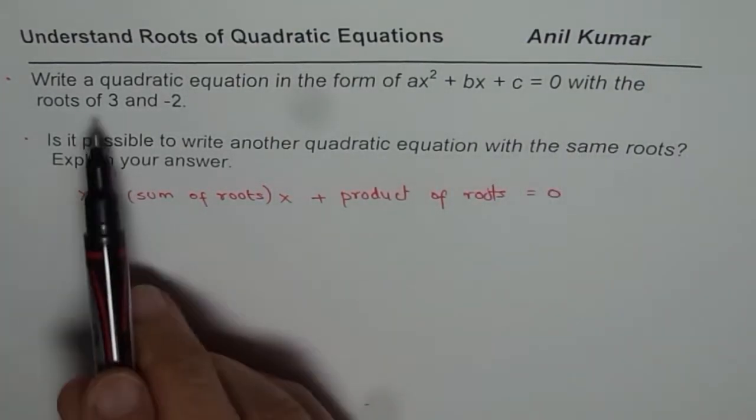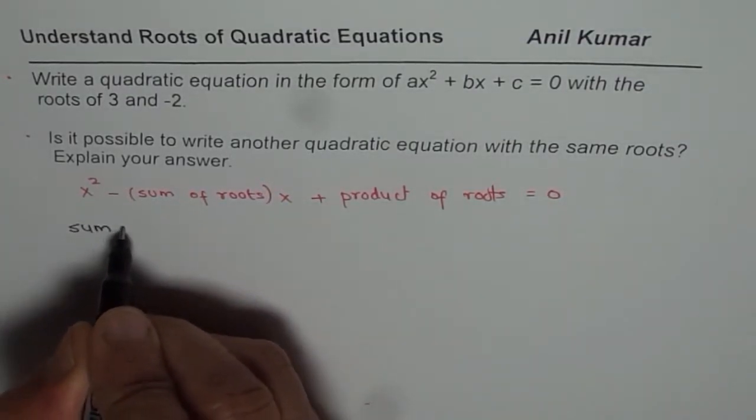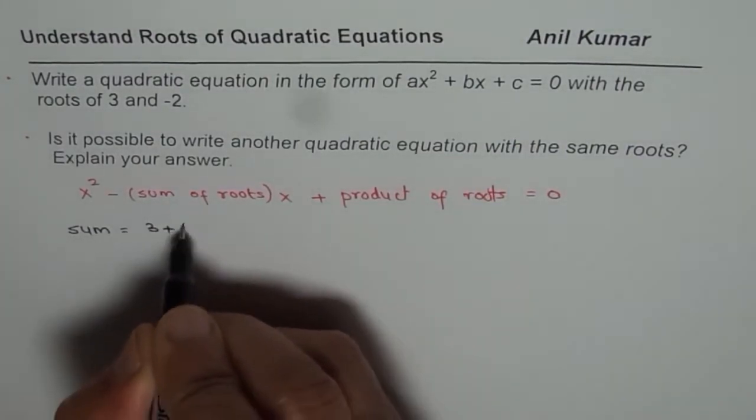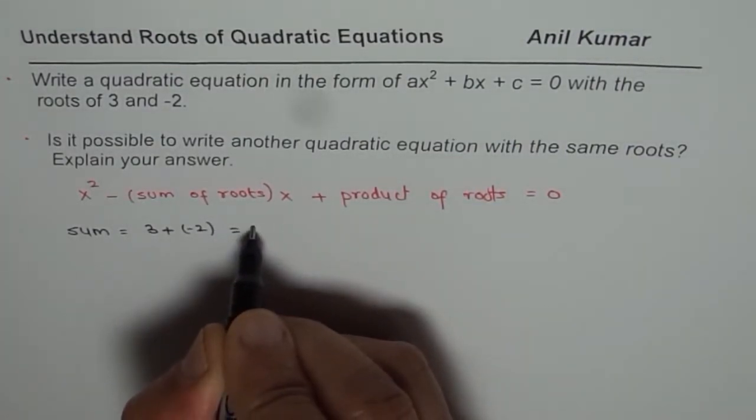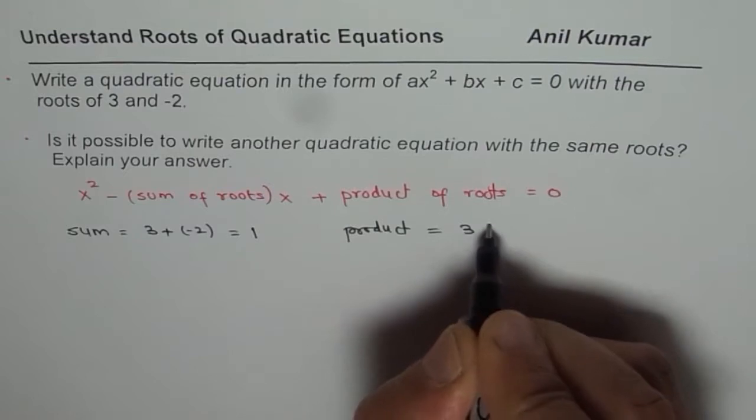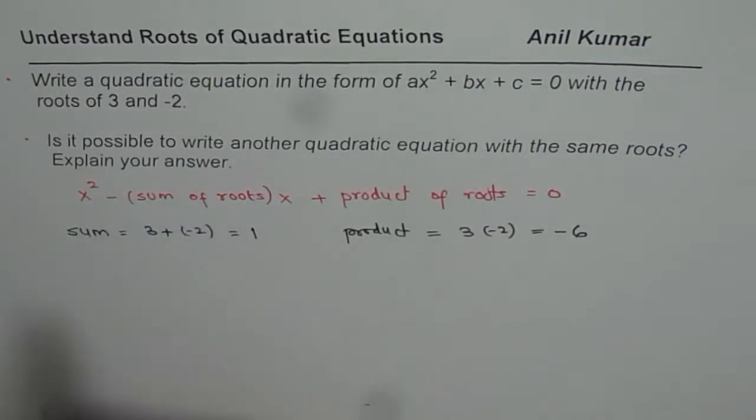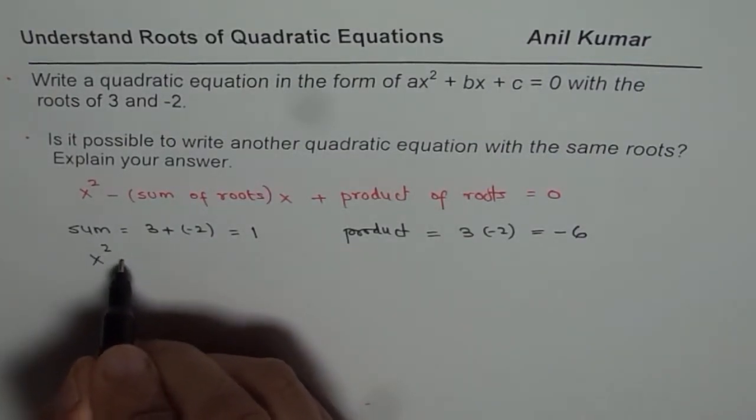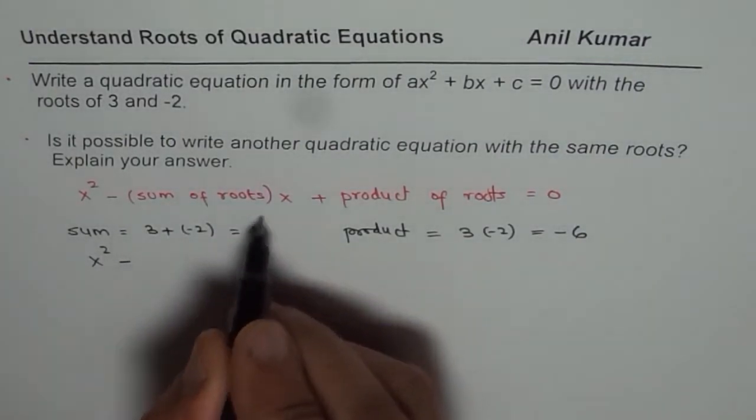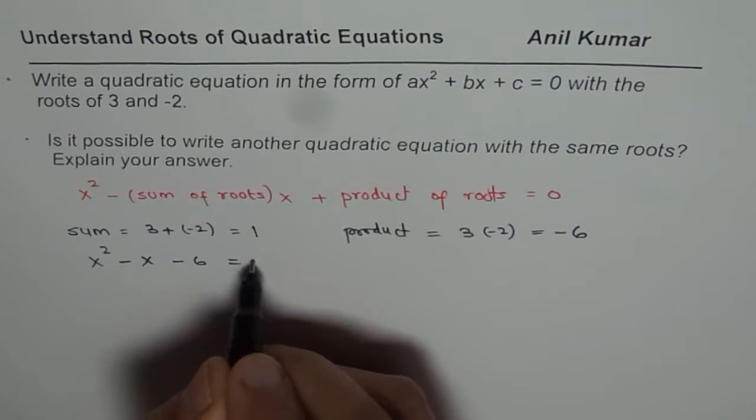Now in this particular case, we are given roots at 3 and -2. So what we can do is, we can find sum and product of these roots. So sum of roots is 3 + (-2) and that gives us 1, and product equals 3 × (-2) which is -6. Substituting the values, we get x² minus sum which is 1, so we can just write x here, and then product as -6 equals to 0.